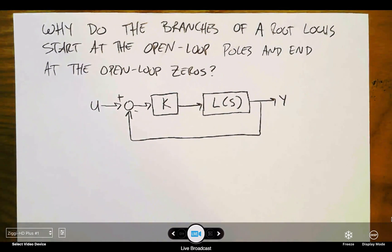One of the things that gets said often when talking about Root Locus is that the branches of the Root Locus will start at the open-loop poles and end at the open-loop zeros, or go off to infinity.